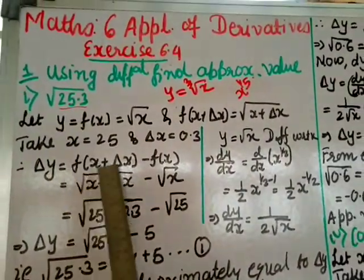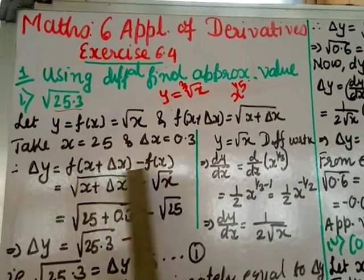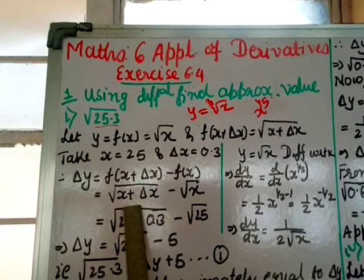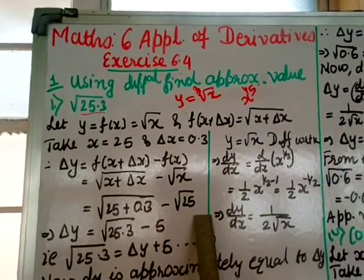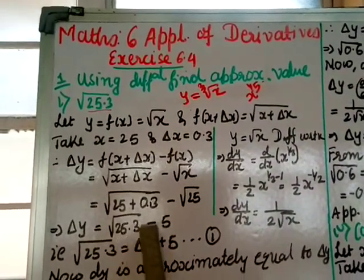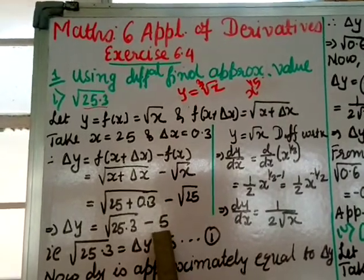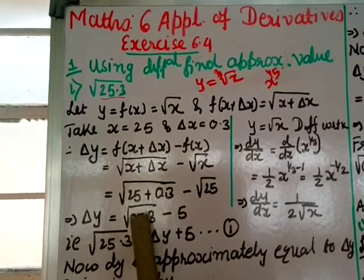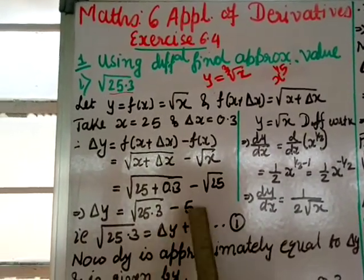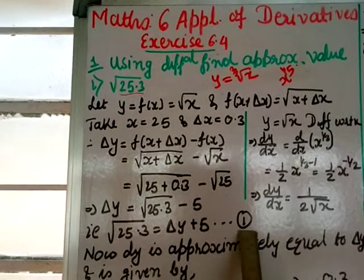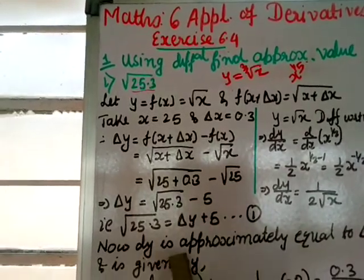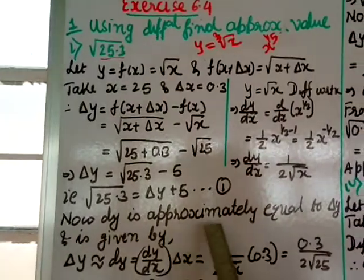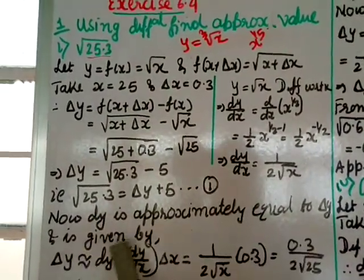Using the formula δy = f(x + δx) - f(x), put the values: f(x + δx) = √25.3 and f(x) = √25 = 5. So δy = √25.3 - 5, which gives √25.3 = δy + 5. Call this equation 1.